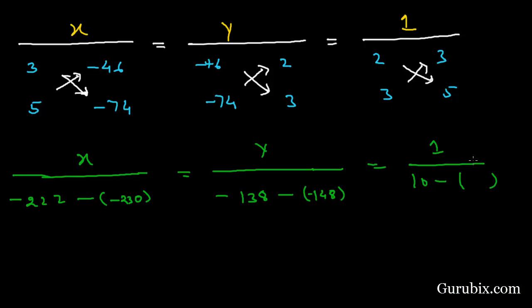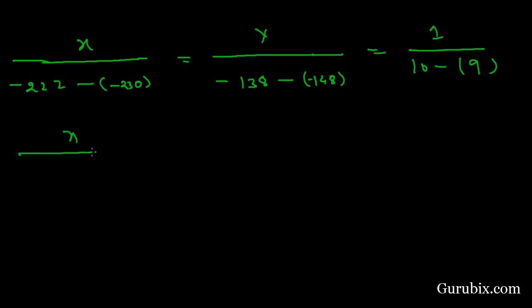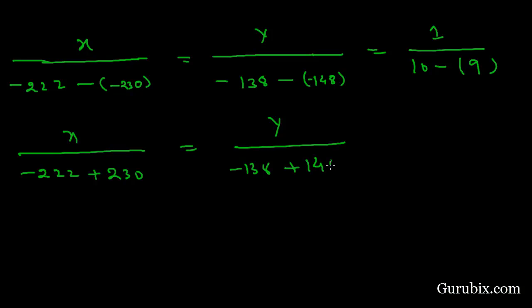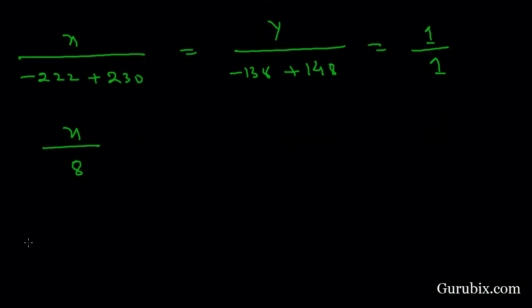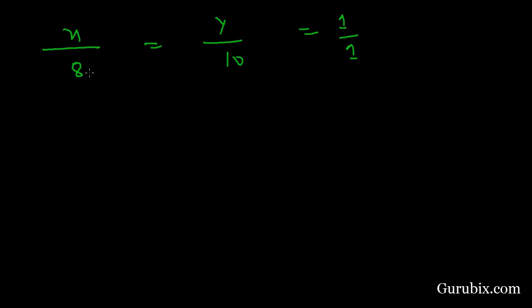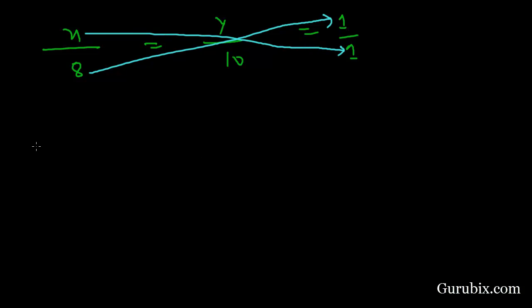For the denominator, we multiply 5 by 2 to get 10, then subtract 3 times 3 which is 9. Solving further: −222 minus (−230) equals positive 8. For Y: −138 minus (−148) equals positive 10. The denominator is 10 minus 9 equals 1. So X over 8 equals Y over 10 equals 1 over 1, giving X = 8 and Y = 10.